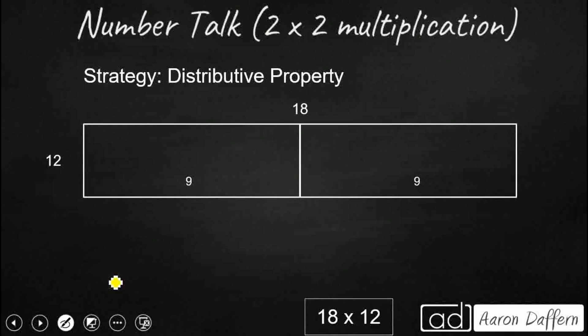So the first thing we could have done is to use the distributive property, and that is our breaking apart property. What this does is this lets us take one of our factors and break it apart into two smaller addends.